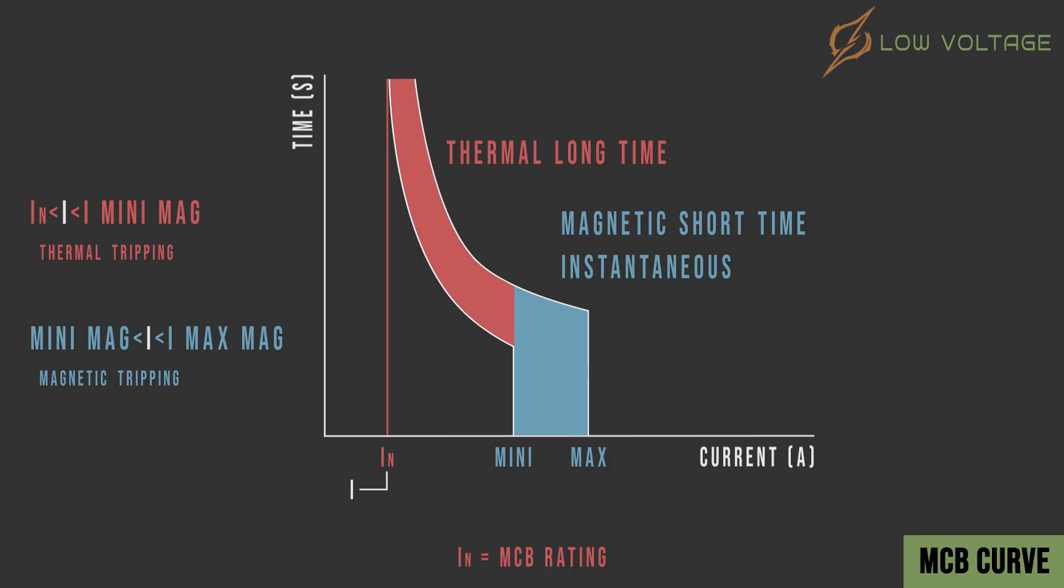Now if the current is before IN setting, the MCB will not trip. And if the current is after maximum magnetic setting, the MCB will trip in short instantaneous time, but at risk of fire hazard or damage depending on the intensity of the fault.